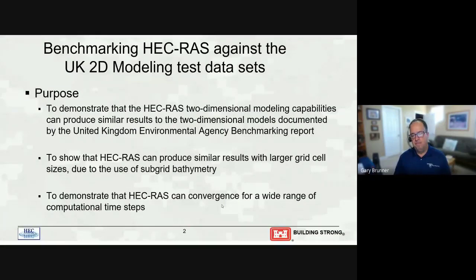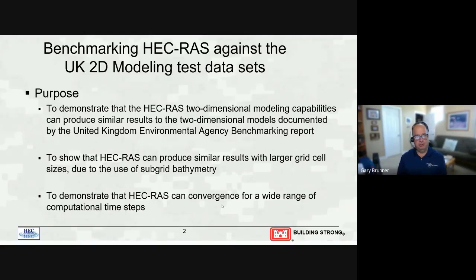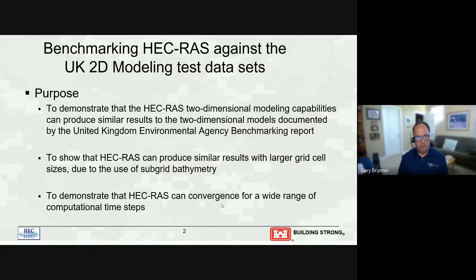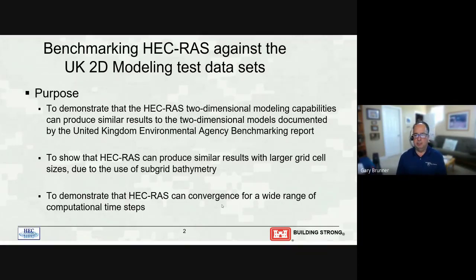What are we going to be covering? Before we even did a V&V document, back when we had our very first beta version of RAS with 2D, we were getting a lot of comments about how well it compared against other 2D models. In Europe they had done what they called a benchmarking study, where they compared as many 2D models as they could against a set of datasets. The purpose of what we're going to see here is to demonstrate that RAS has modeling capabilities that can produce similar results to other two-dimensional models documented in this study by the United Kingdom Environmental Agency, called their benchmarking report.